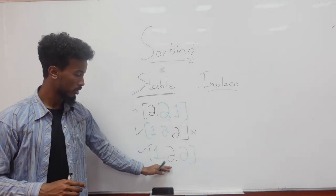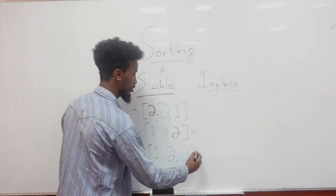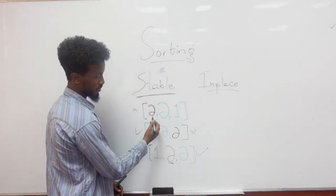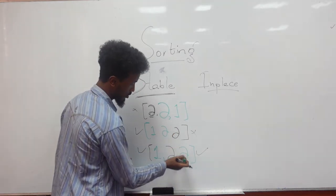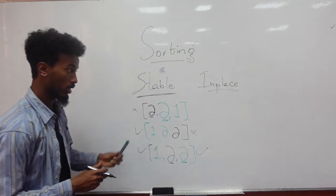This is not stable, whereas this is stable. Because the black one is appearing first, and the green one is appearing last. And this is stability.